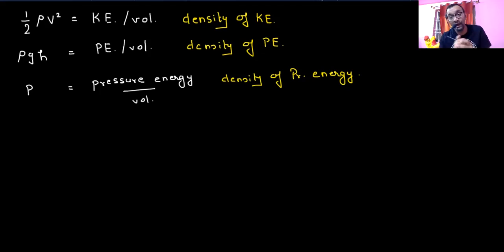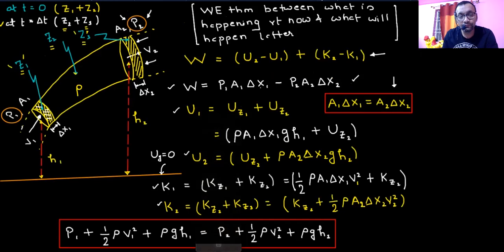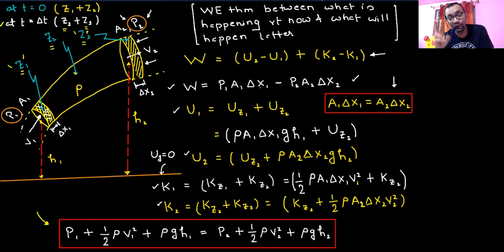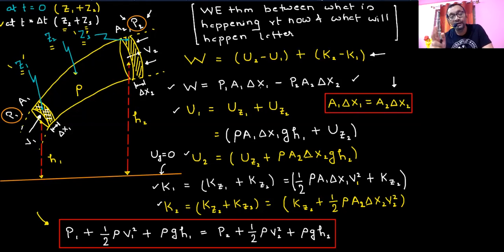P1 + (1/2)·rho·v1² + rho·g·h1 is the density of total energy. Also note: when applying work-energy theorem for a flow scenario, we are applying it at two points in space at the same time — not two points in time. Whatever is happening at Point 1 right now is equated to what is happening at Point 2 right now.